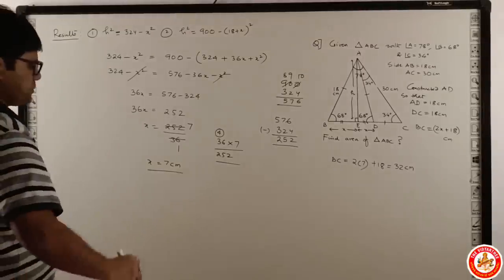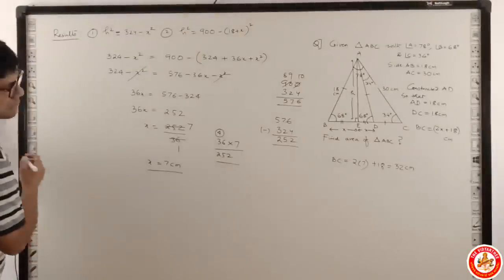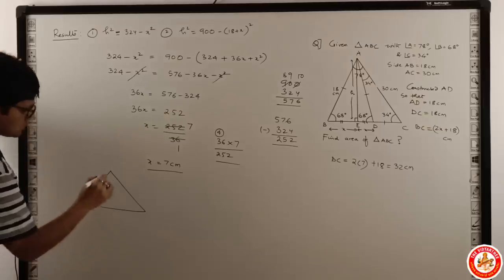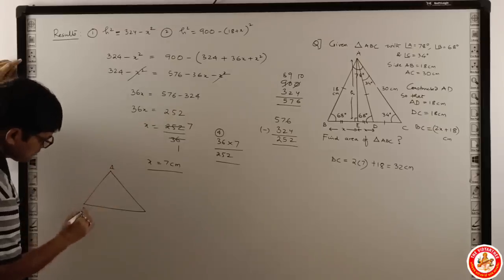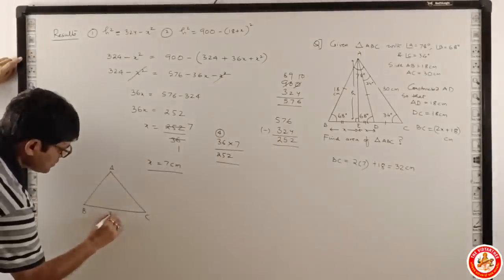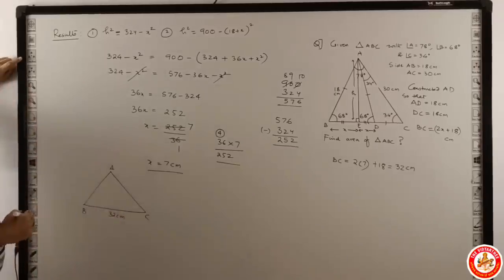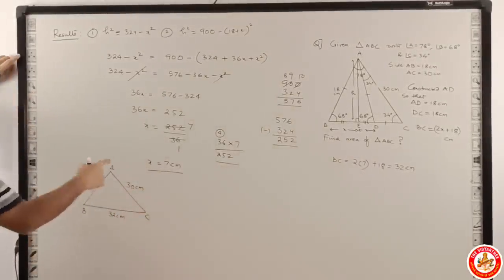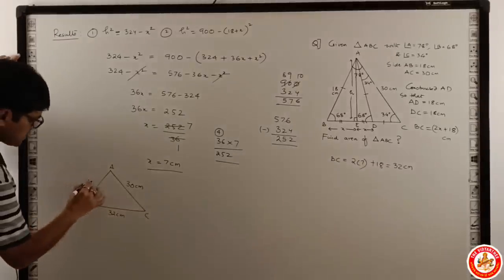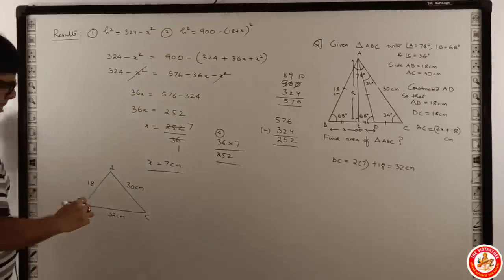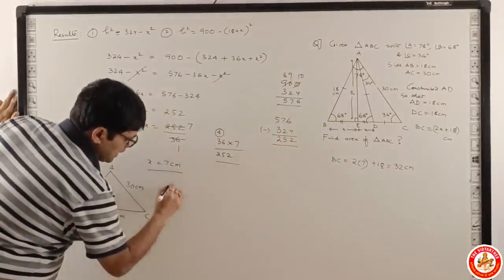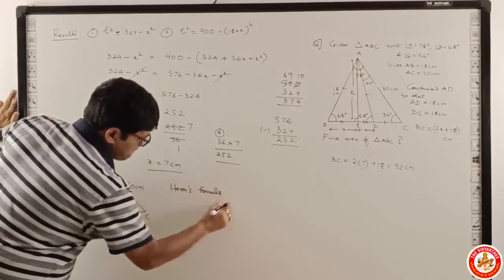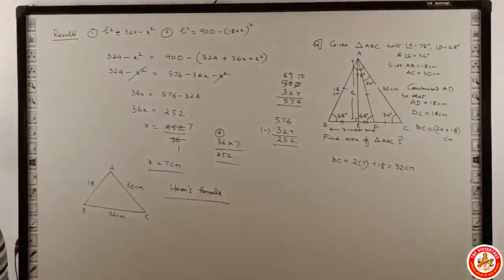Now I have got a triangle ABC where BC is 32 centimeters, AC is 30 centimeters, and AB is 18 centimeters. So I can use Heron's formula because it's a scalene triangle.